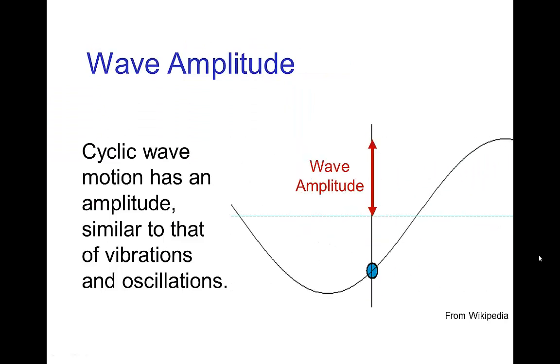One of the main characteristics of a wave for both transverse and longitudinal is the amplitude of the wave. When you have a cyclic motion, we have an amplitude. With waves, it's similar to vibrations or oscillations. The amplitude is the measure from the extreme to the center.